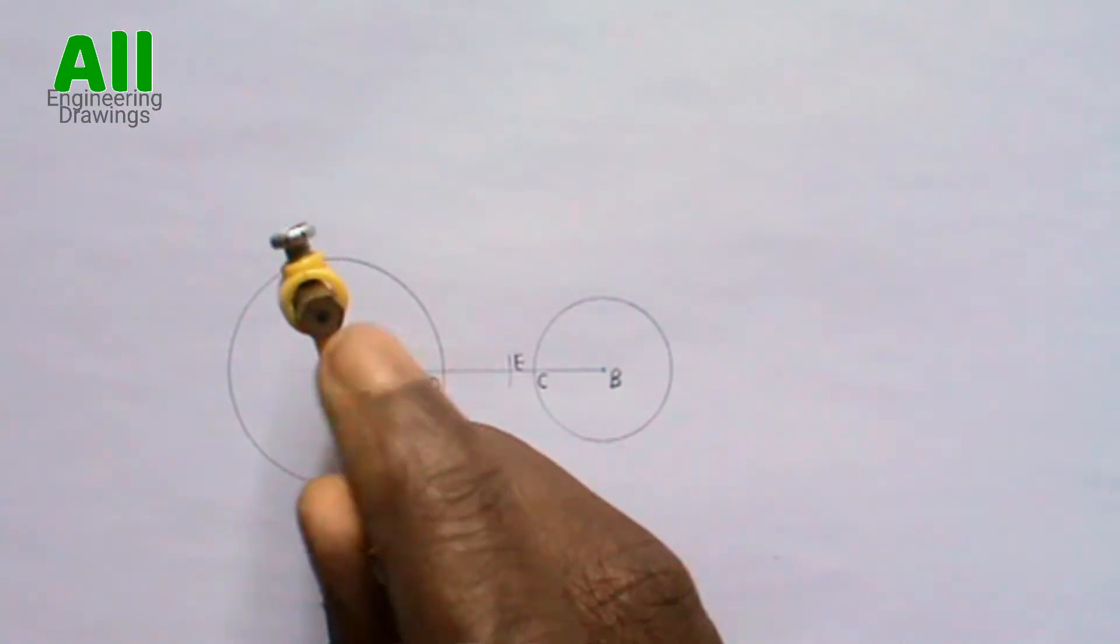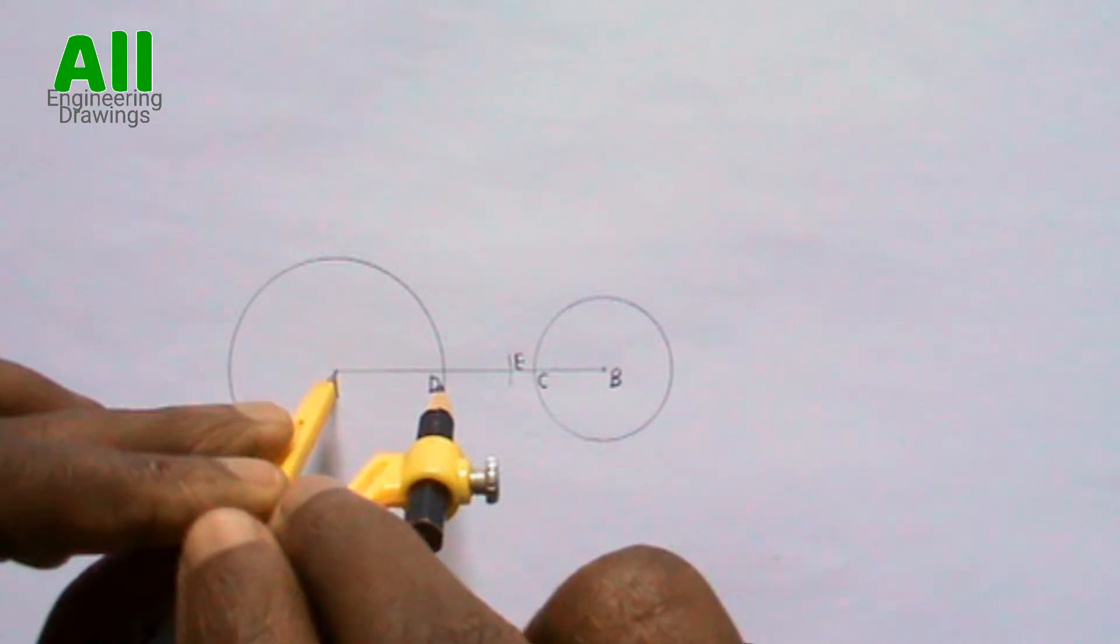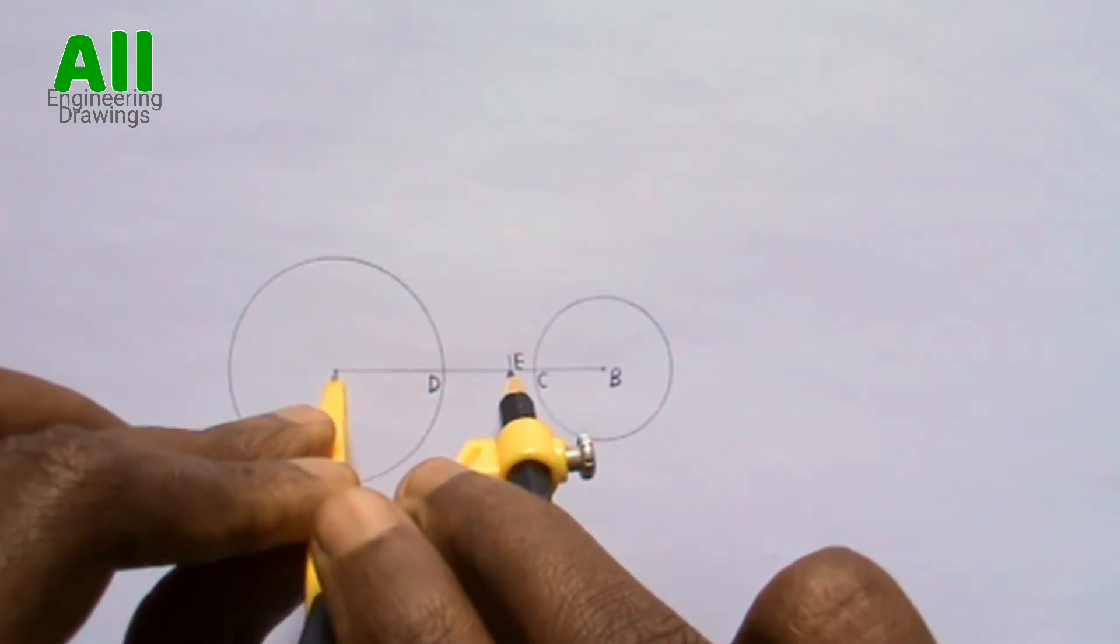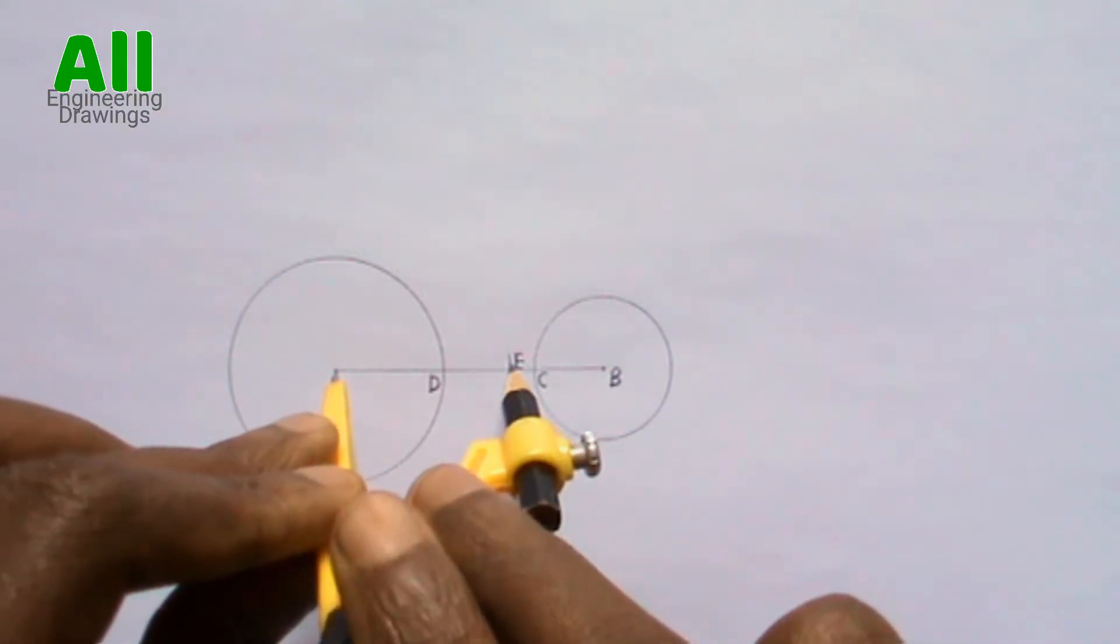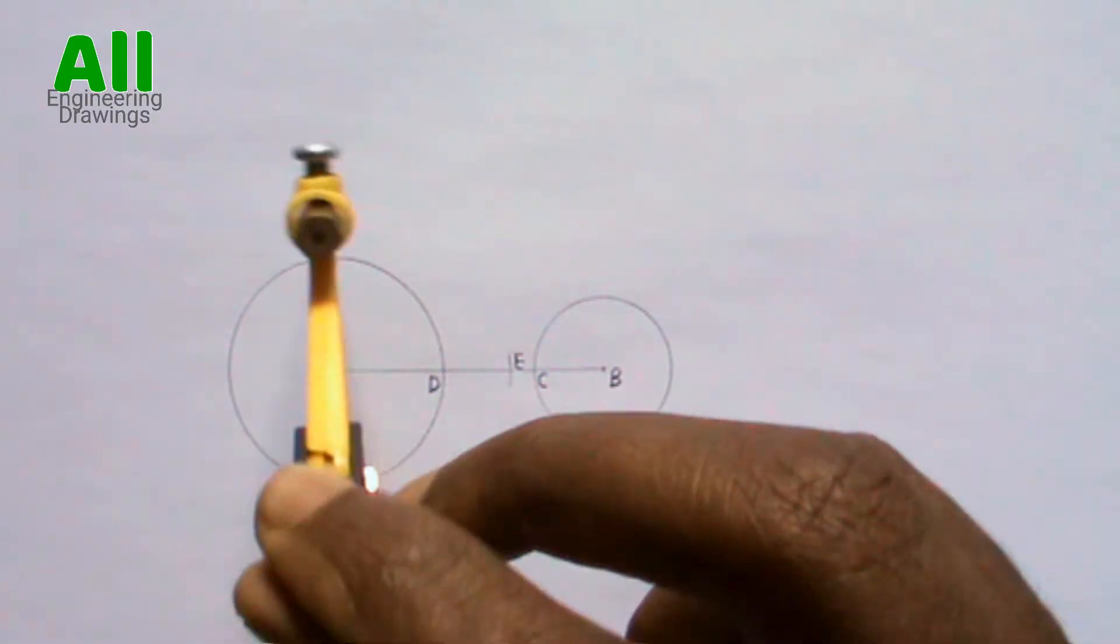After that place your compass on point A. Extend your compass in such a way that your pencil is on point E, then cut an arc.